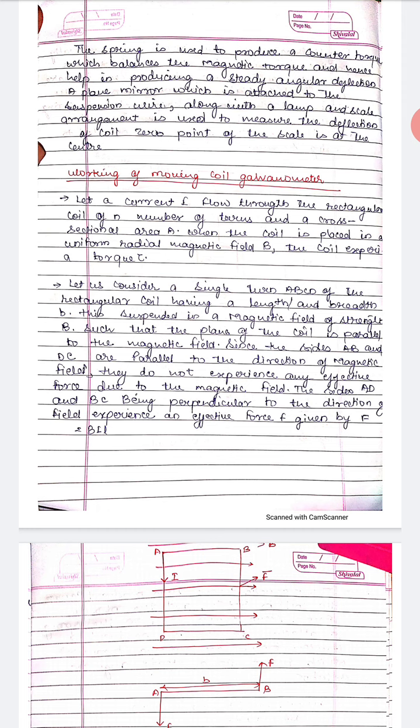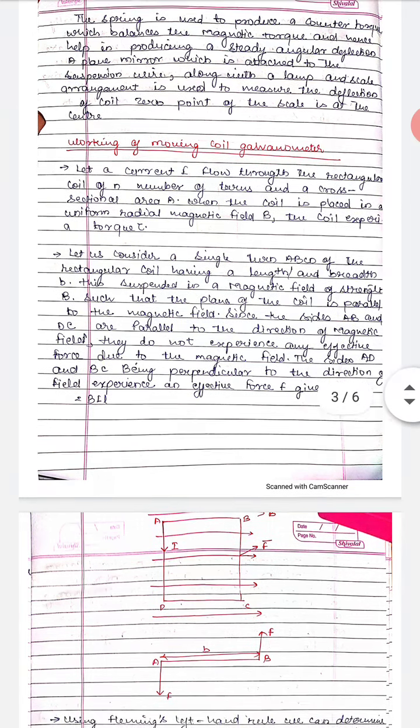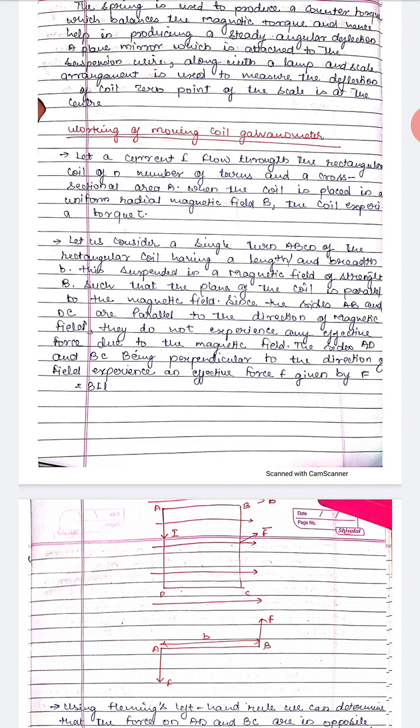Let us consider a single turn ABCD of the rectangular coil having length l and breadth b, suspended in a magnetic field of strength b, such that the plane of the coil is parallel to the magnetic field. Since the sides AB and DC are parallel to the direction of the magnetic field, the angle theta is zero, so the net force on them is zero.